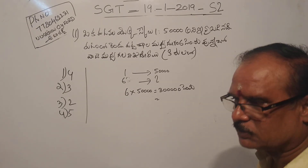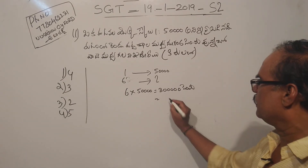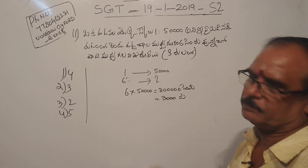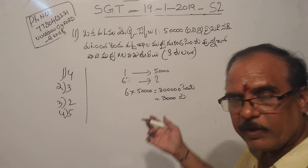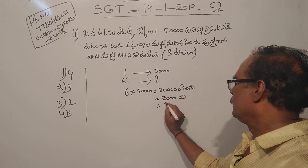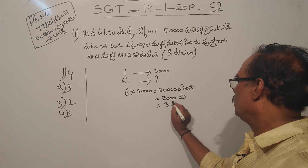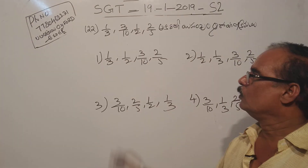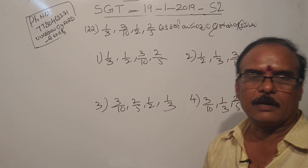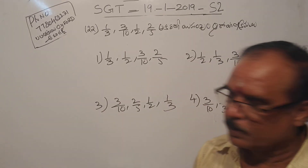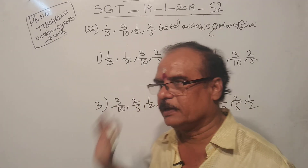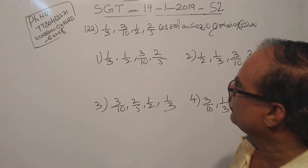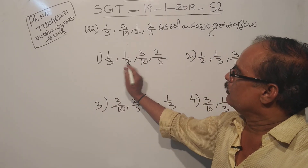If you want to use one centimeter to the center one, you can use three meters. If you want to use one kilometer, you can use three kilometers. So this is the second option. If you want to use one centimeter, you will need to use one centimeter.